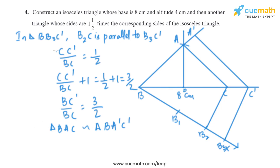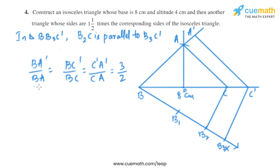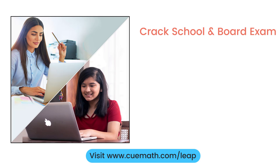Now let's do the justification of this construction. In triangle BB3C', B2C is parallel to B3C', so we get CC' by BC' equal to 1/2. Adding 1 to both sides, we get BC' by BC equal to 3/2. By AA similarity criteria, triangle BA'C' is similar to triangle BAC, so we get BA' by BA equal to BC' by BC equal to C'A' by CA equal to 3/2.